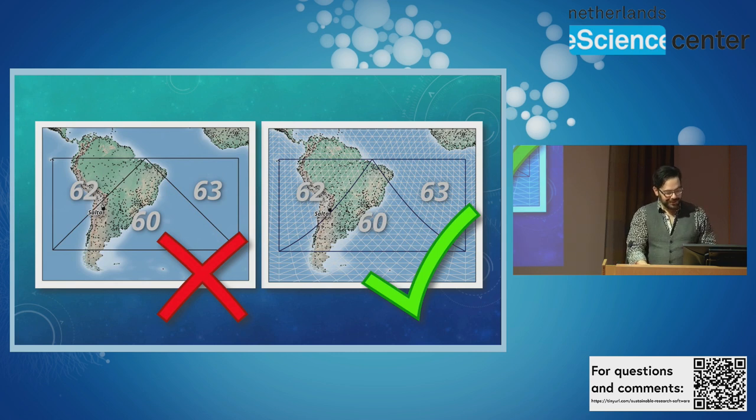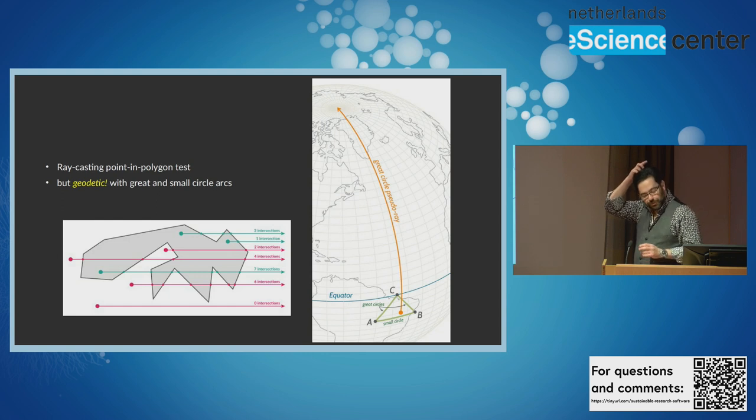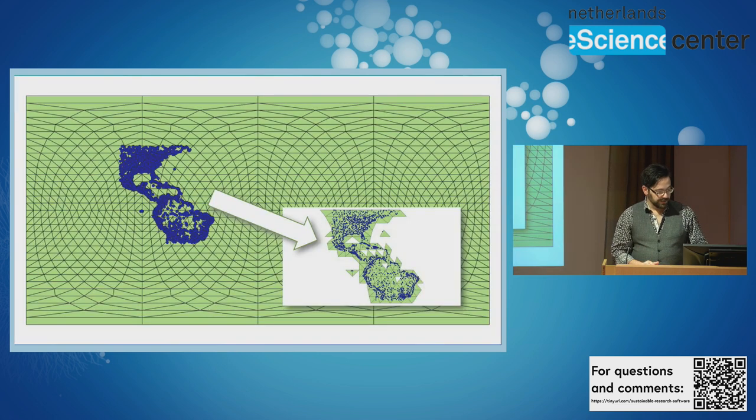So one has to be careful about that sort of thing. So a next step for me is to implement in the same library a geodetic point and polygon algorithm. Pretty easy to do. Well, fairly straightforward to do. The classic point and polygon algorithm works. You just have to use geodetic lines as in great circles, not straight arcs. But that's on the books. That's what I'm planning to do.